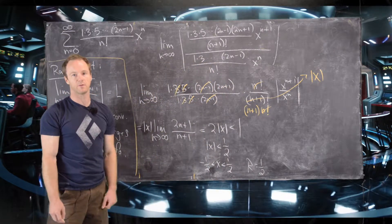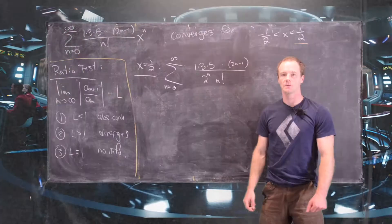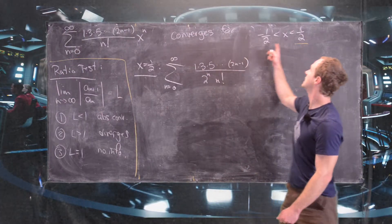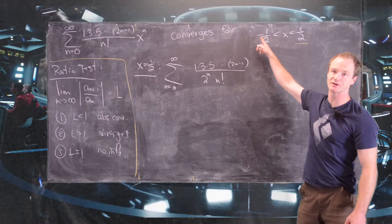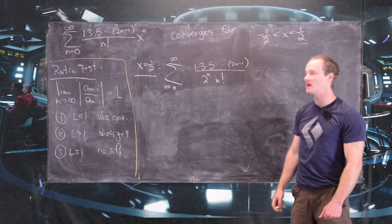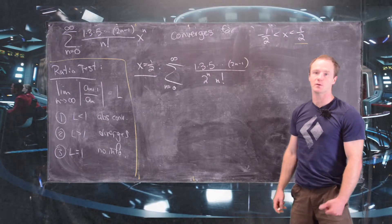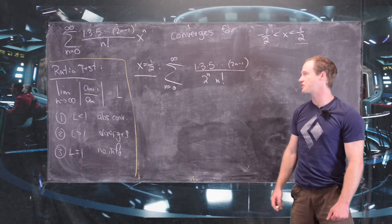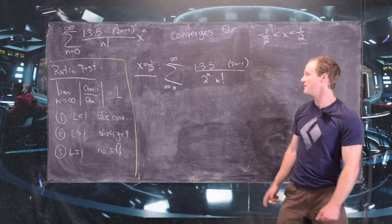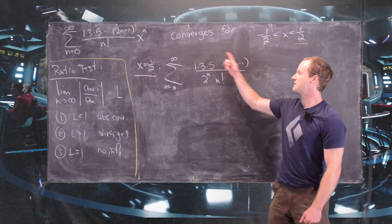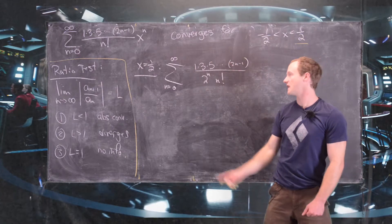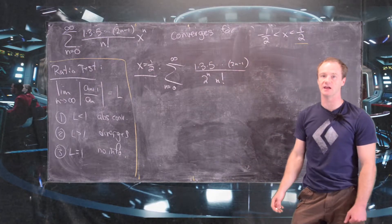So far we've proved that the power series converges at least for x strictly between negative 1/2 and 1/2. Now we want to check the endpoints to determine the full interval of convergence. Let's look at the endpoint x equals 1/2. At this point, x to the n becomes (1/2) to the n, which we can write by putting 2 to the n in the denominator.